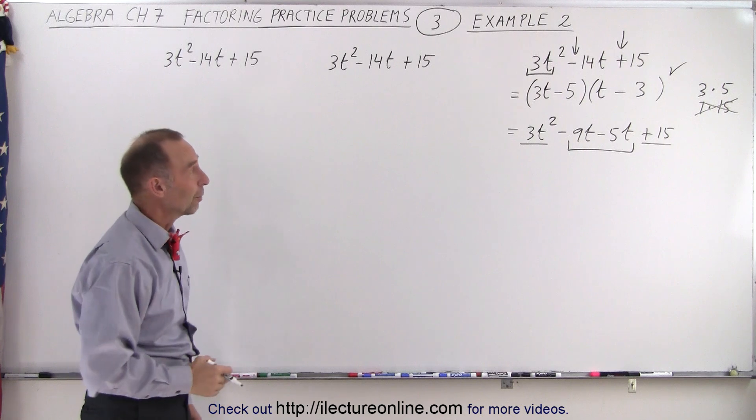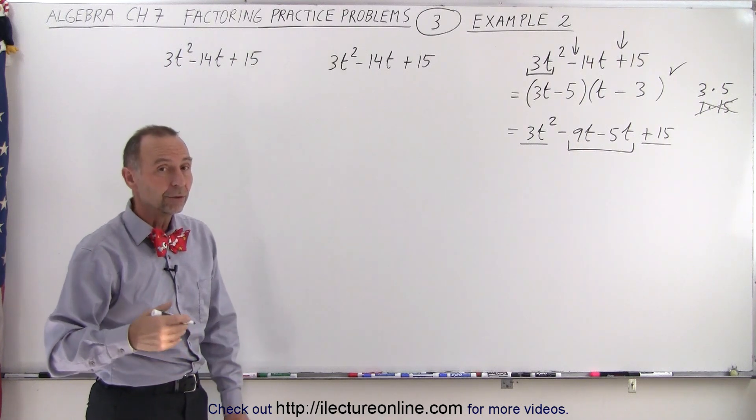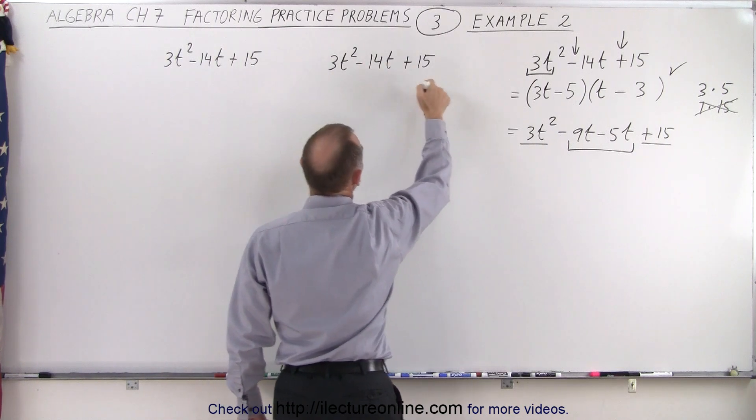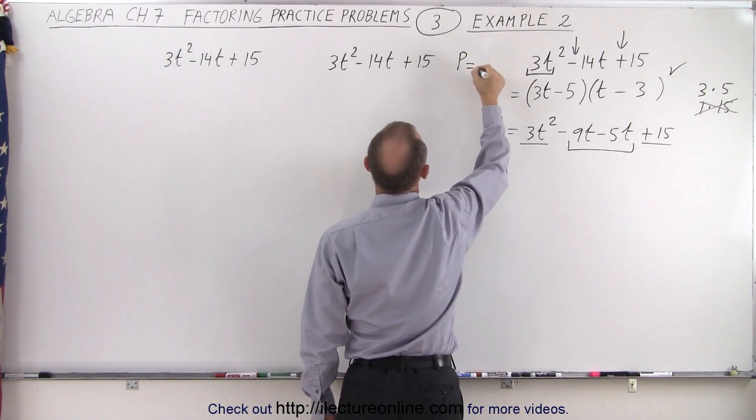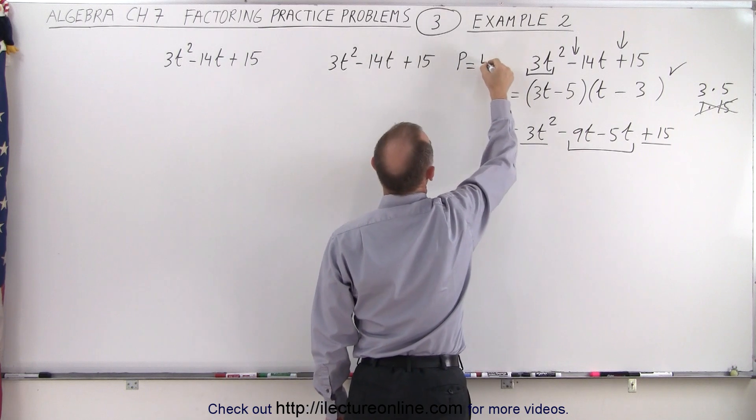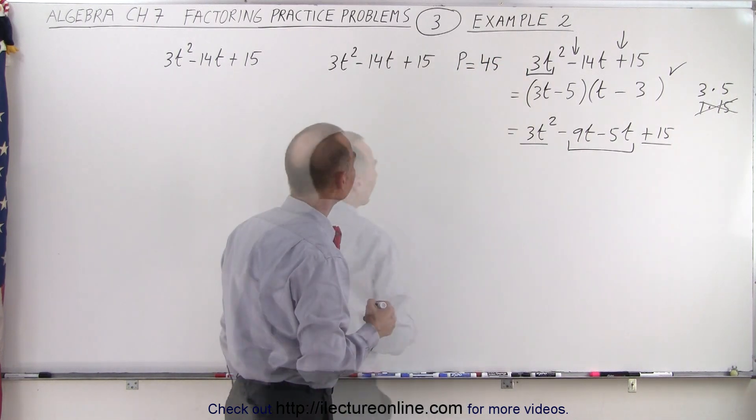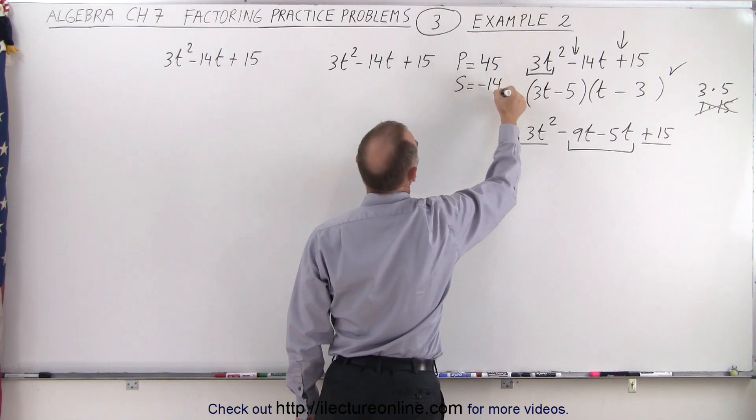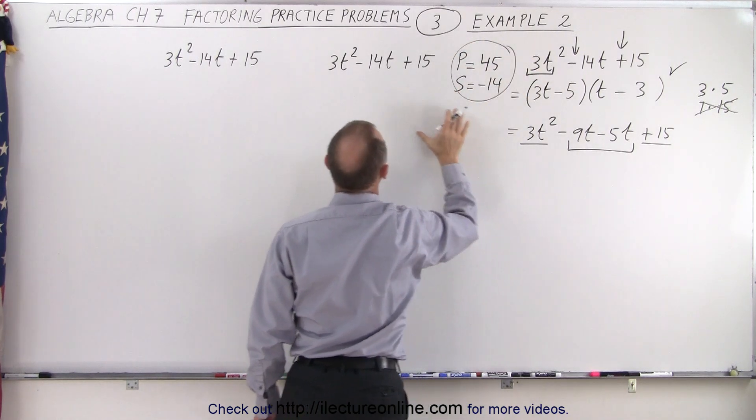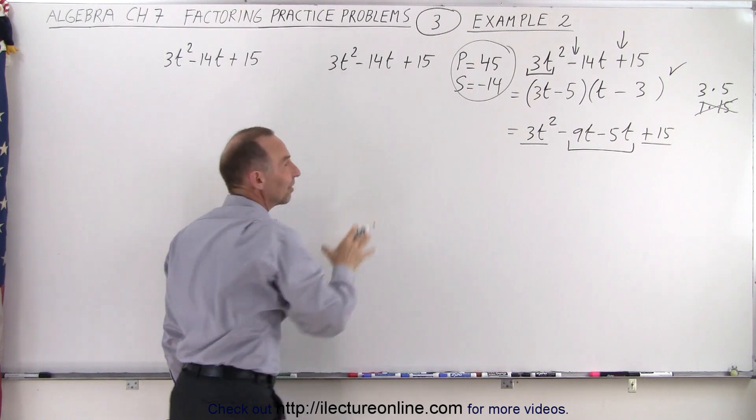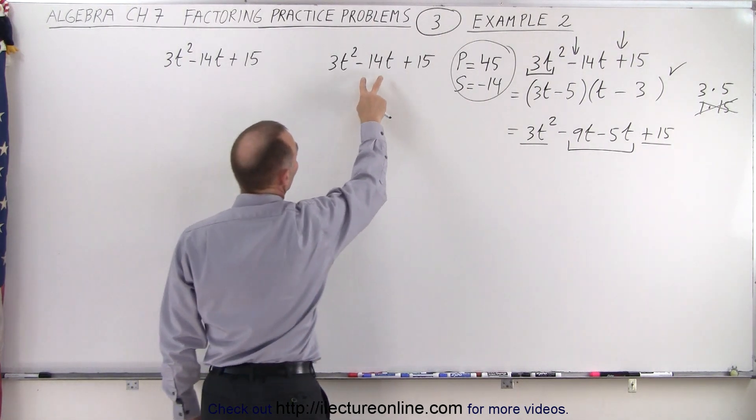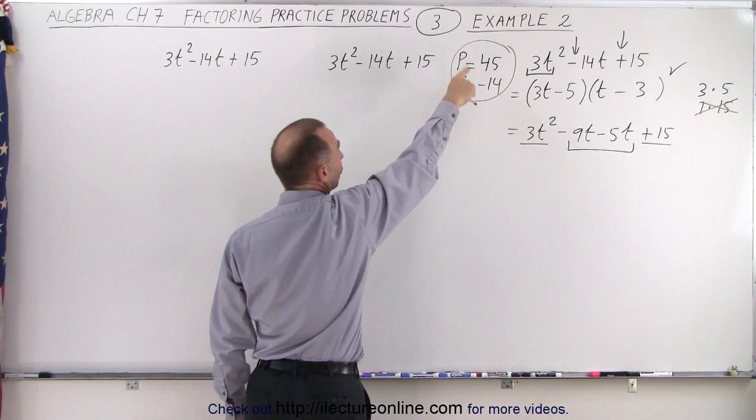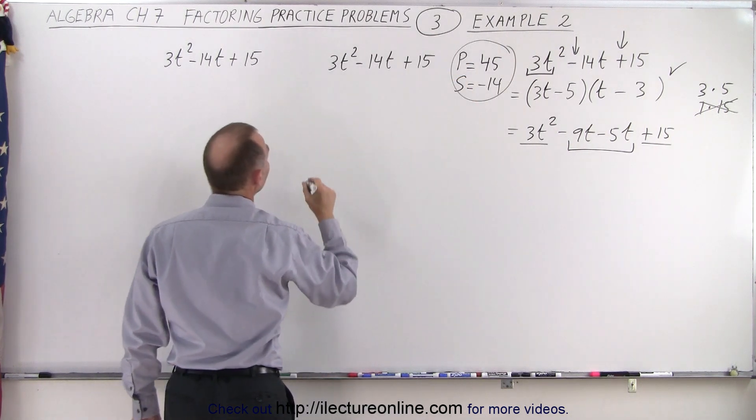You can go ahead and factor it that way or you can use the following technique. You can multiply the first and the last term together and see okay the product is equal to 3 times 15 which is 45. And then the sum is going to be minus 14. What do we do with this? Well we're going to rewrite this as a polynomial of four terms. In other words we're going to split the middle term into two middle terms and the two numbers we're going to use are going to be found by using that hint right there.